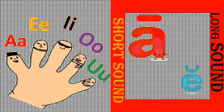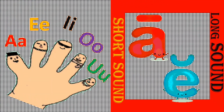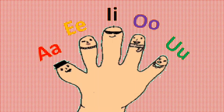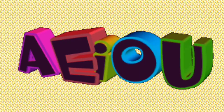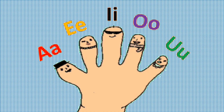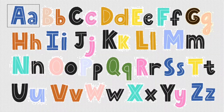Here are five vowels — five vowels in the English alphabet. A, E, I, O, U. Here you have five vowels in the English alphabet.